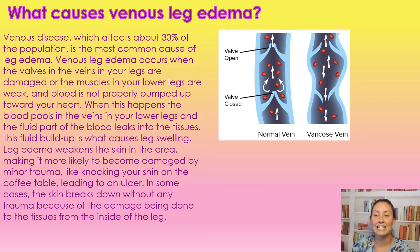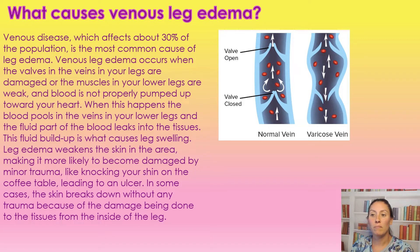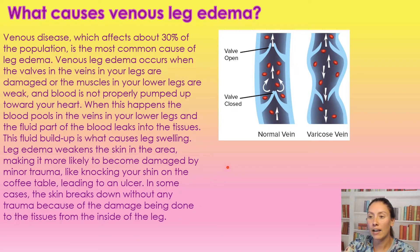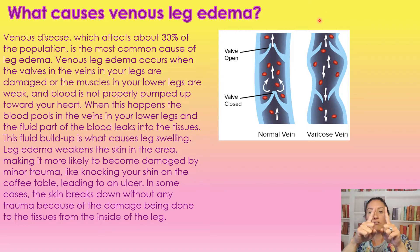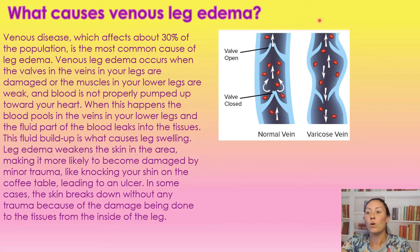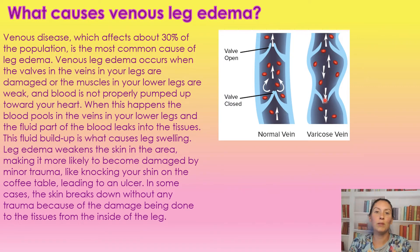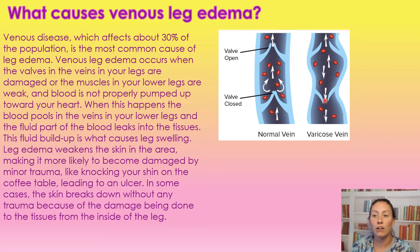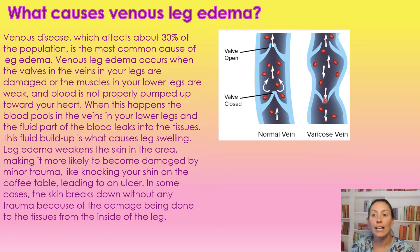Venous disease, which affects about 30 percent of the population, is the most common cause of leg edema or swelling. Venous leg edema occurs when the valves in the veins of the legs are damaged or the muscles in the lower legs are weakened and blood is not properly pumped to your heart. In normal veins, the valves close with muscle contractions, letting blood flow through and preventing it from flowing back down. With venous disease, these valves stay open so blood can flow back down.